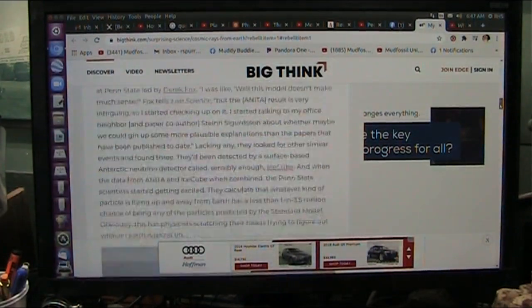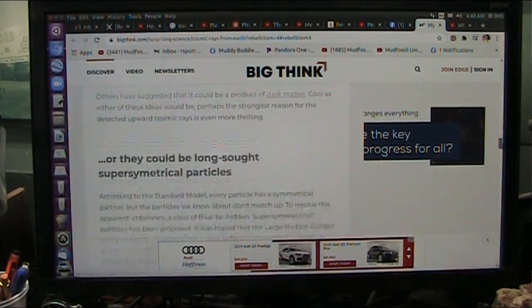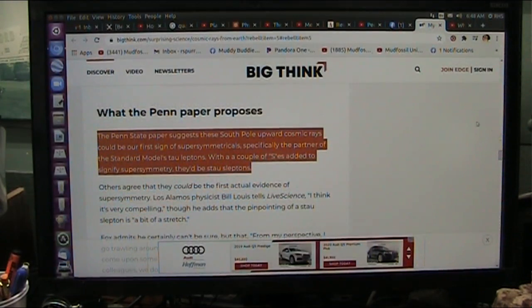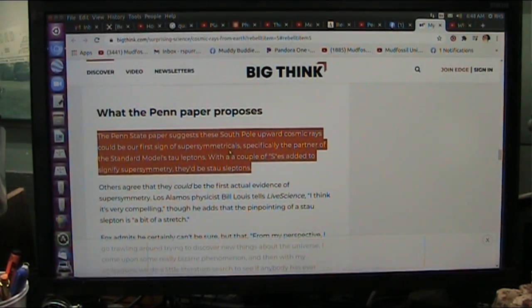Well, okay, let me try to explain it. I get down to here, and this is about the Penn State paper that was done suggesting the South Pole upward cosmic rays could be our first sign of supersymmetricals. Specifically, the partner of the standard model's tau lepton. Well, what the hell is that? Well, let me tell you something right now. The standard model doesn't work. Absolutely doesn't work.